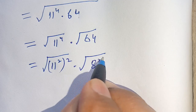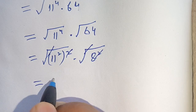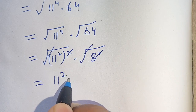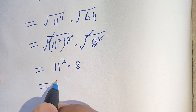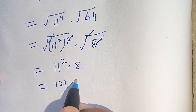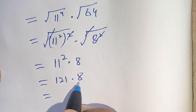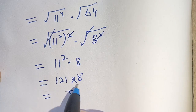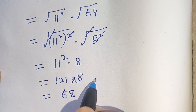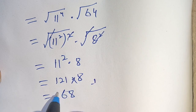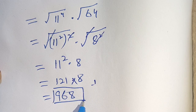Cancelling the squares with the square roots leaves us with 11² times 8. We know 11² equals 121. Multiplying 121 times 8: 8 times 1 is 8, 8 times 2 is 16 carry 1, 8 times 1 plus 1 is 9. Thus our final answer is 968.